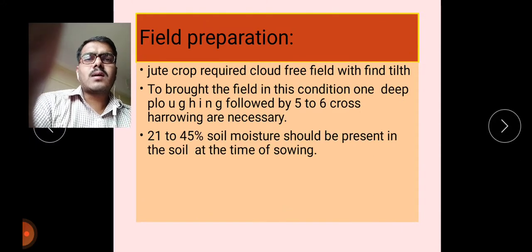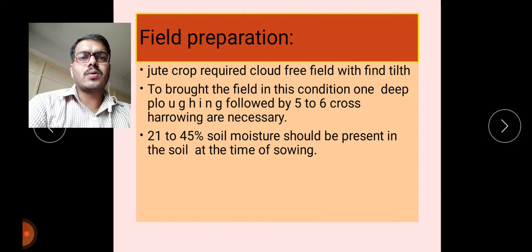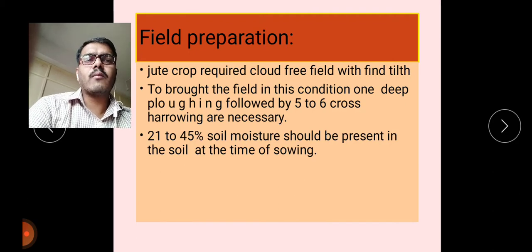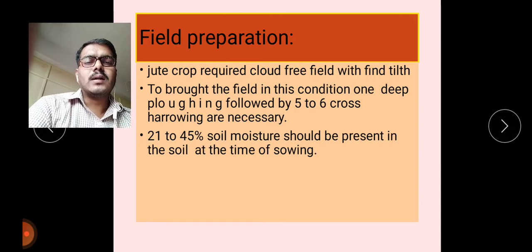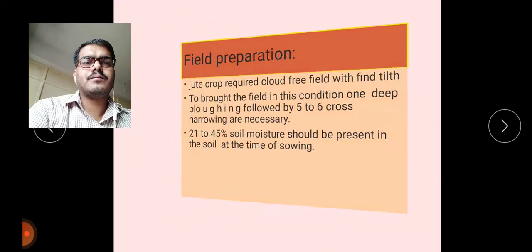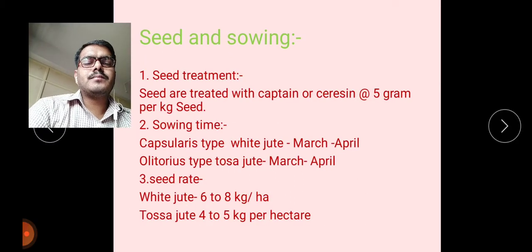For field preparation, jute crops require a clod-free field with fine tilth. This condition is brought about by one deep plowing followed by five to six crosswise harrowings. A fine seed bed is required for jute cultivation. At the time of sowing, about 21 to 45 percent soil moisture is required for better growth and development of jute seedlings.